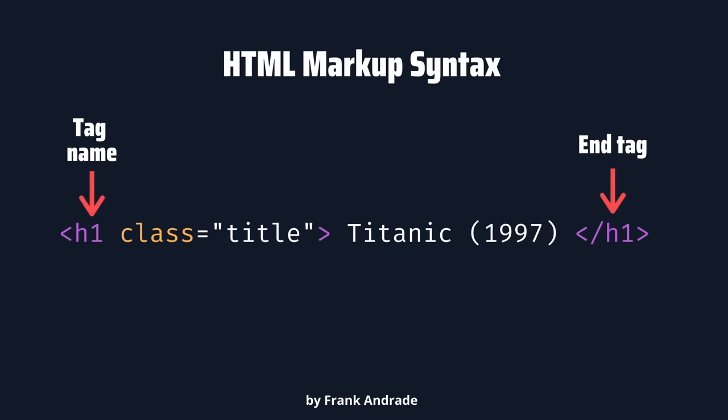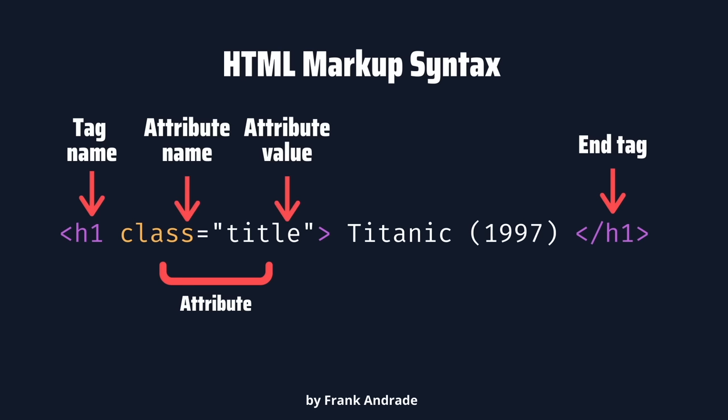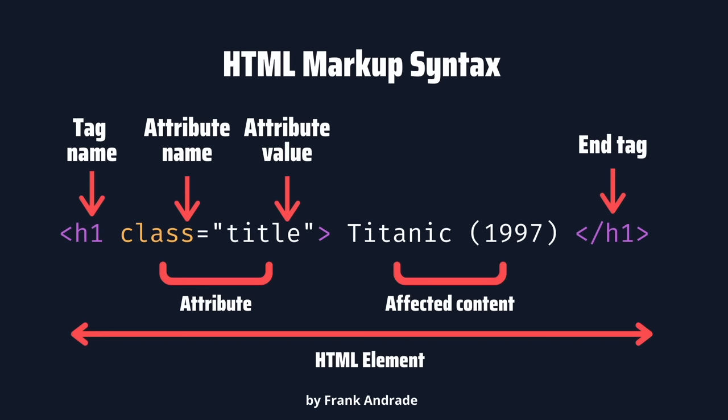The second element is the tag attribute. Attributes allow us to customize a tag and are defined within the opening tag. For example, the h1 tag can contain an attribute named class with value title. Attributes are assigned a value using the equal sign. Finally, we have the content — what we usually see on a website, like the title of an article. All of this together is known as an HTML element or node.